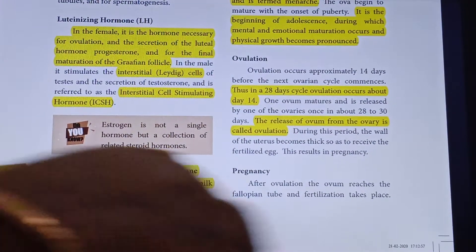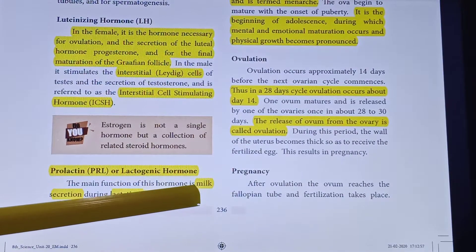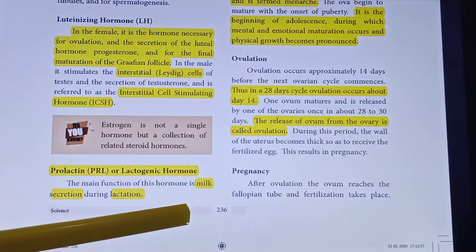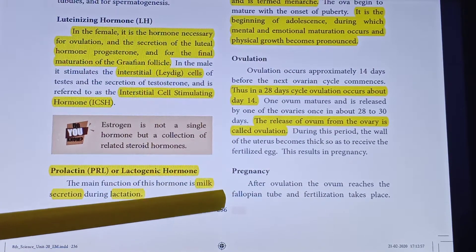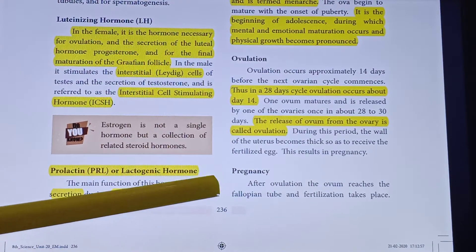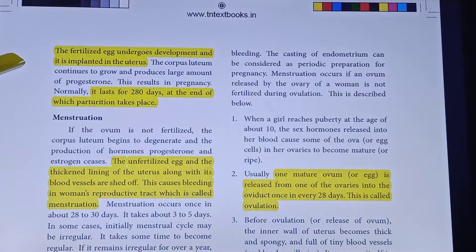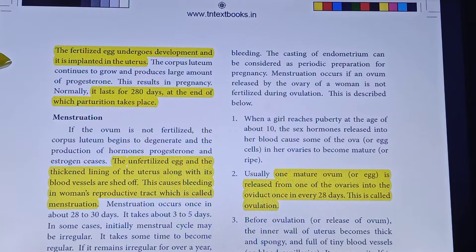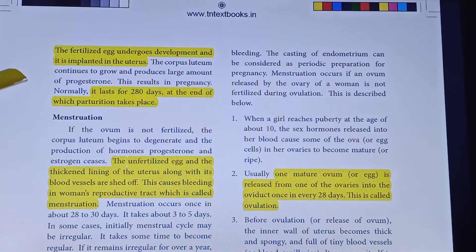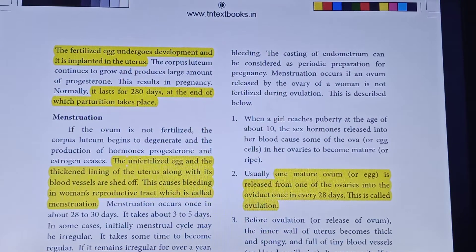After ovulation, the ovum reaches the fallopian tube and fertilization takes place. The fertilized egg travels through the fallopian tube and reaches the uterus, where it is implanted. The corpus luteum continues to grow and produce a large amount of progesterone during the pregnancy period.